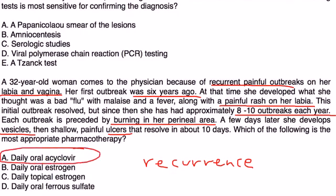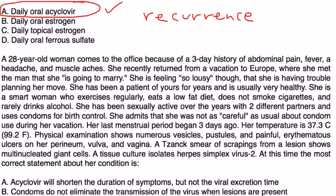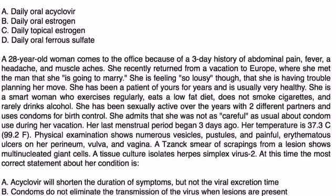Finally, a 28-year-old woman comes to the office because of a three-day history of abdominal pain, fever, headache, and muscle aches. She recently returned from a vacation to Europe where she met a man that she's going to marry. She's feeling so lousy though that she is having trouble planning her move. She has been a patient of yours for years and is usually very healthy. She's a smart woman who exercises regularly, eats a low-fat diet, does not smoke cigarettes, and rarely drinks alcohol. She has been sexually active over the years with two different partners and uses condoms for birth control. She admits that she was not as careful as usual about condom use during her vacation. Her last menstrual period began three days ago.